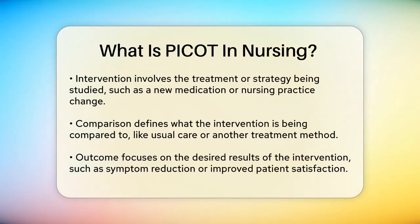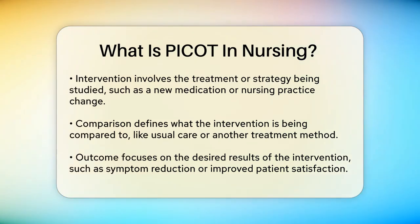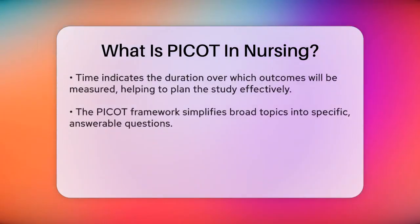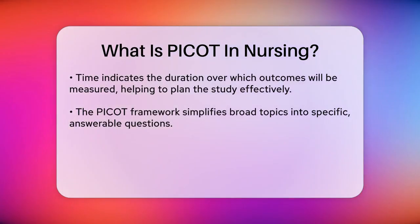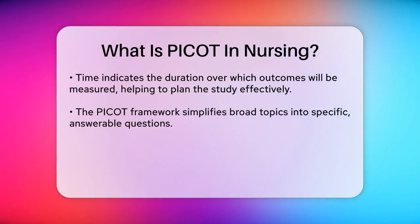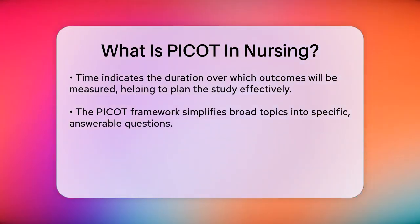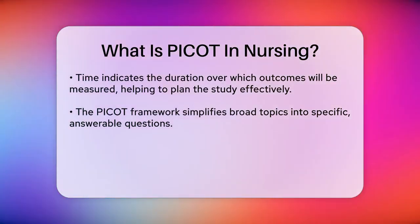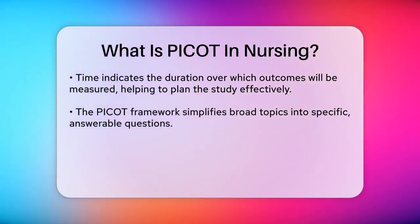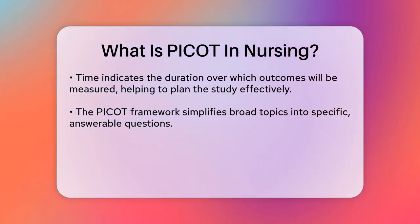Outcome is about what you hope to achieve or measure as a result of the intervention. This could be a reduction in symptoms, improved patient satisfaction, or better health outcomes. For instance, you might be looking to see if the new insulin pump reduces blood sugar levels more effectively.